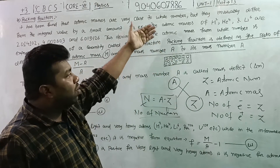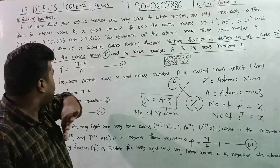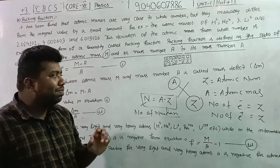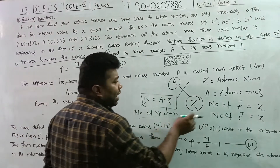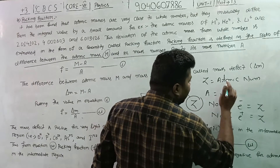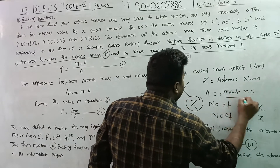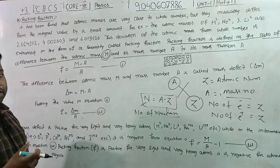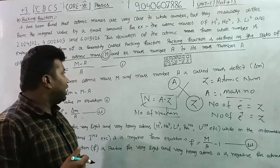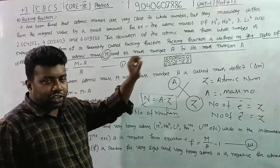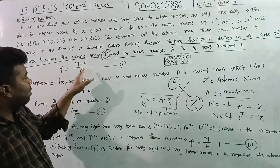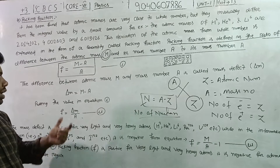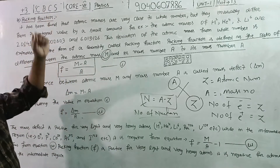What is the packing fraction? The packing fraction is defined as the ratio of the difference between atomic mass M and mass number A. M means actual mass. So: actual mass minus mass number, divided by A. F is equal to M minus A by A. F is the packing fraction.